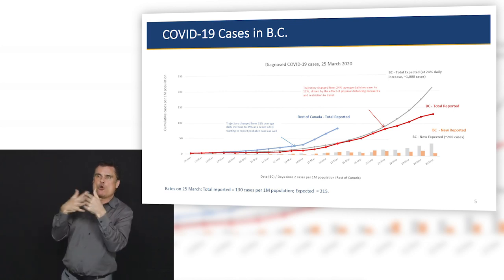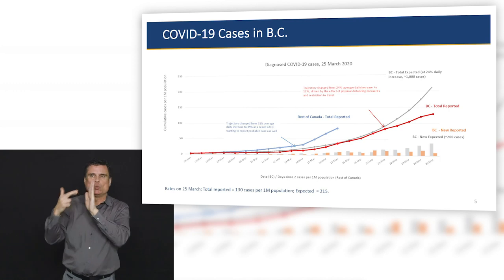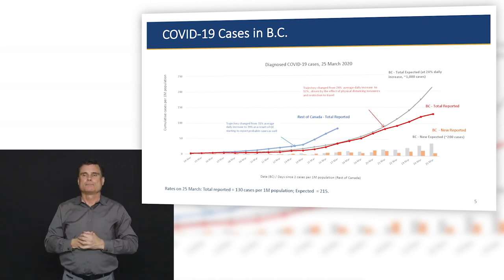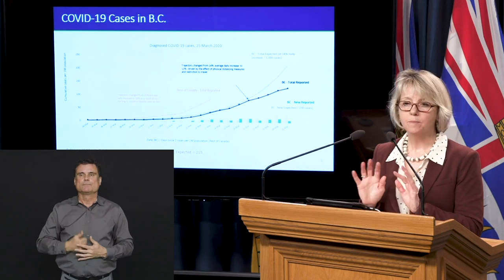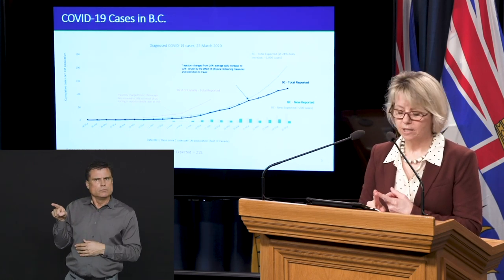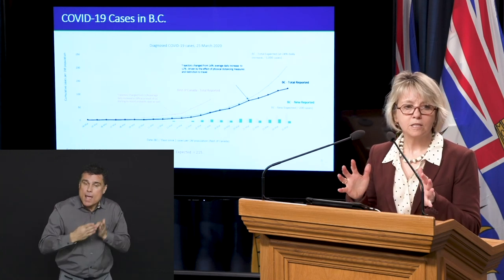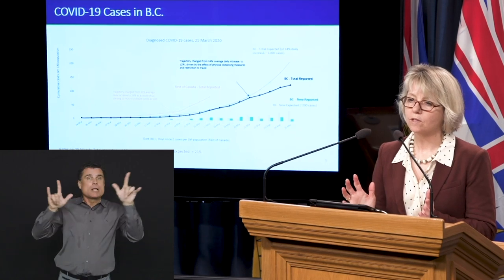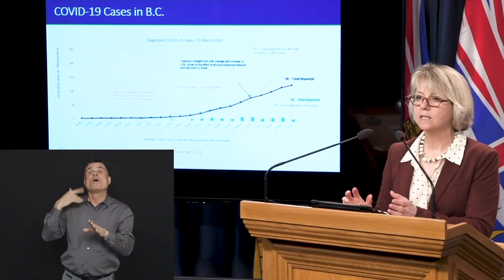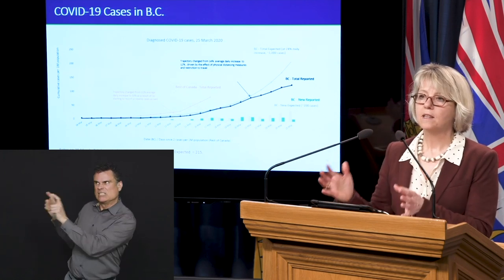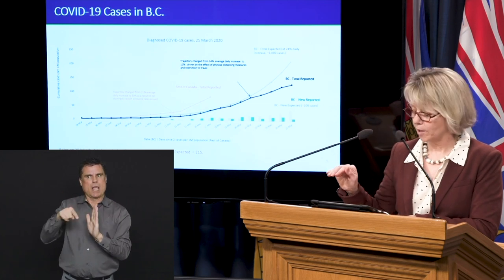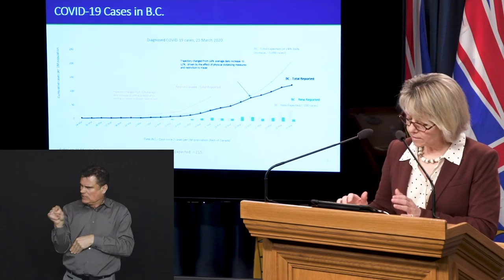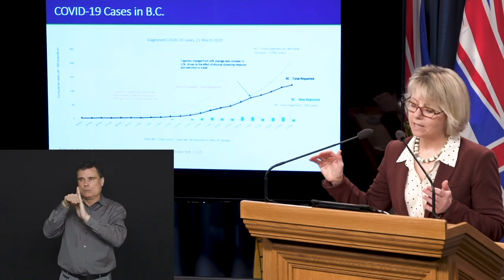Our trajectory has changed from an increase of about 24 percent per day down to around 12 percent per day — that's the slowing of new cases, which is good. It's driven by a variety of things: our changing testing strategy, physical distancing, and the restrictions on travel, which has stopped the group of people who were continuing to come into BC having been exposed in other countries. That's the part I'll be watching very carefully over the coming weeks to months — what we mean by bending or flattening that curve.